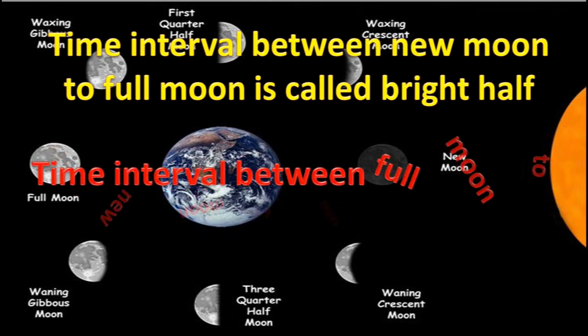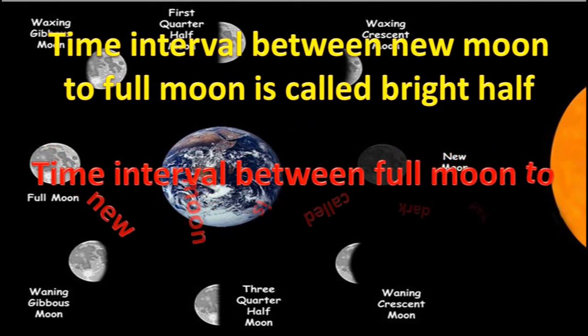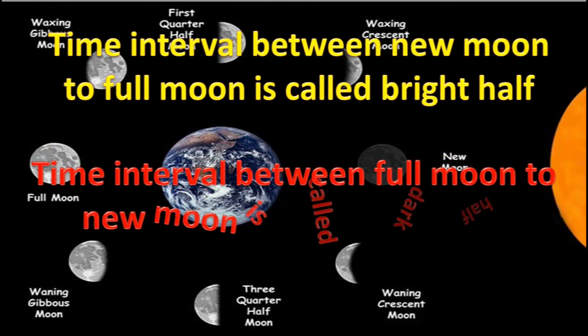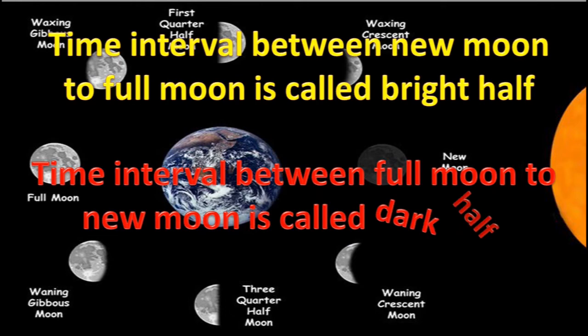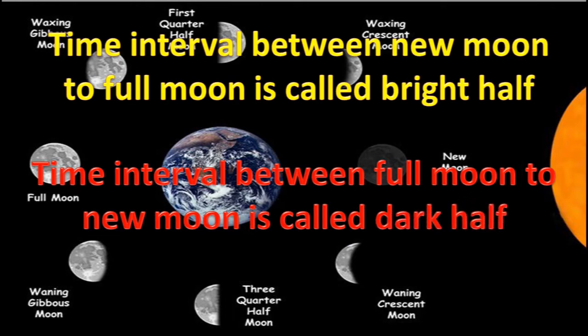The time interval between full moon to new moon is called the dark half, because in the dark half the dark part of the moon gradually increases and the bright part gradually decreases. When the moon is in full moon, a complete spherical moon is observed.